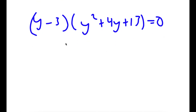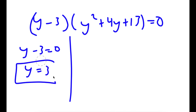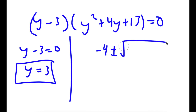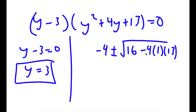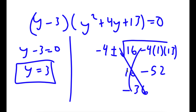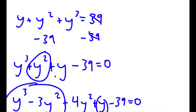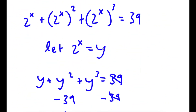This gives me two equations: y minus 3 equals 0, meaning y equals 3, and y squared plus 4y plus 13 equals 0. Using the quadratic formula: negative 4 plus or minus the square root of 4 squared minus 4 times 1 times 13. The discriminant is 16 minus 52, which is negative 36. You can't take the square root of a negative number, so my only solution for y is 3.